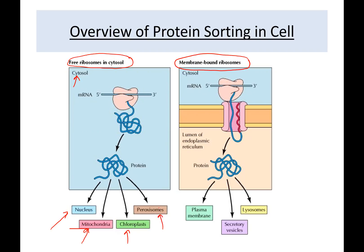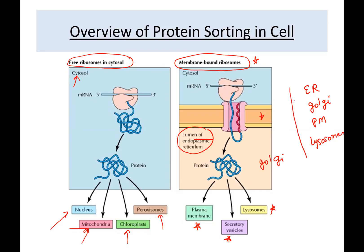In contrast, proteins synthesized on membrane-bound ribosomes are translocated into the ER lumen first, or they can be translocated into the membrane. Later on, they can either stay in the ER or be transported to lysosomes, plasma membrane, secreted out of the cell, or to the Golgi apparatus. Together, ER, Golgi, plasma membrane, and lysosomes make up the endomembrane system.